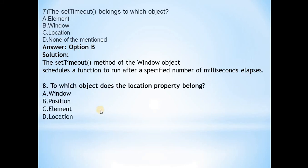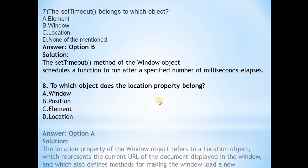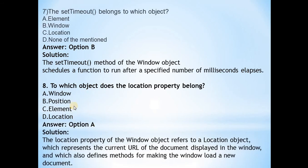The eighth question is: to which object does the location property belong? The answer is again A, that is window. Window is the object that refers to a location object, which represents the current URL of the document displayed in the window and also defines methods for making the window load a new document.